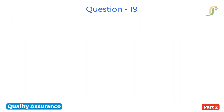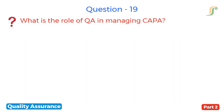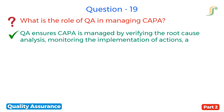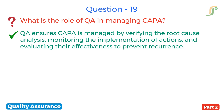The nineteenth question is: what is the role of QA in managing CAPA? QA ensures CAPA is managed by verifying the root cause analysis, monitoring the implementation of actions and evaluating their effectiveness to prevent recurrence.